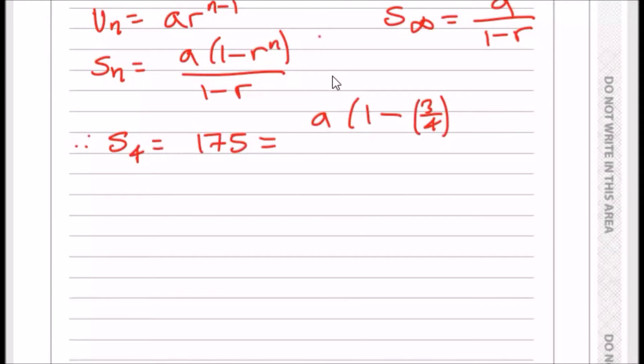which is three quarters, to the power n, which is four, because it's the fourth term, over one minus three quarters. And now all you do is just isolate this.